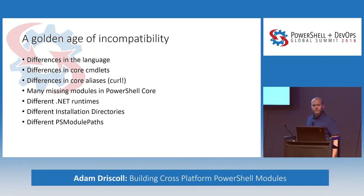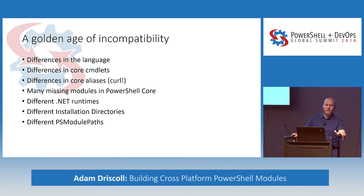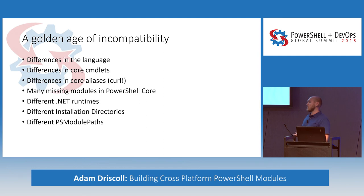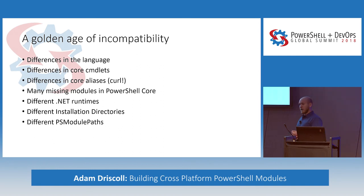That brings a golden age of incompatibility. There are differences in the language, differences in some of the core cmdlets - some new core cmdlets have additional parameters that Windows PowerShell doesn't have. Differences in aliases - curl is a widely used Linux tool and used to be an alias on Windows with Windows PowerShell. Many missing modules. Different .NET runtimes. Different installation directories - PowerShell Core is in Program Files while Windows PowerShell has been historically in the Windows system directory. They also have different PS module paths.